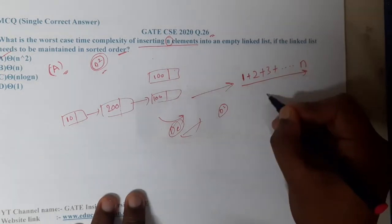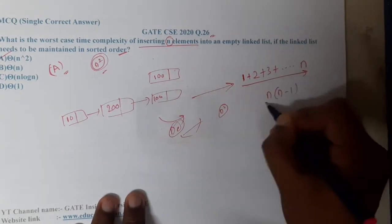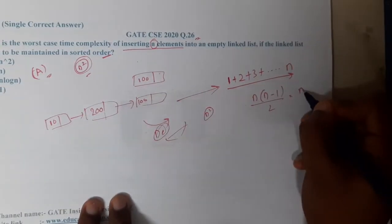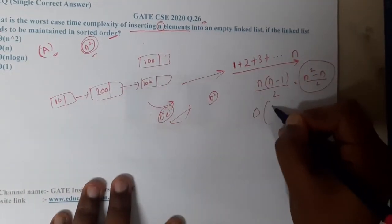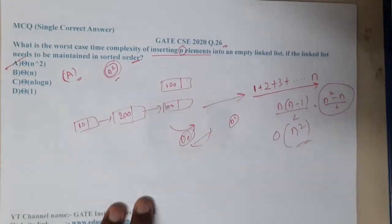If you combine all of them, what will be the result? It is nothing but n into n minus 1 by 2. If you remember the formula, it is nothing but n square minus n by 2. If you apply the time complexity for it, you will be getting n square only.